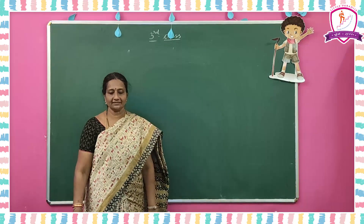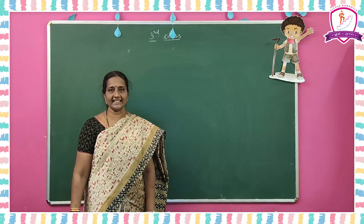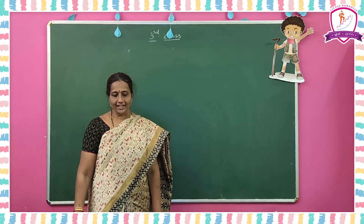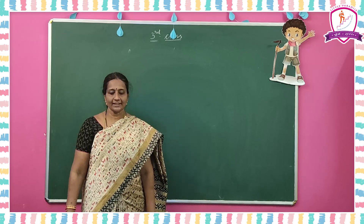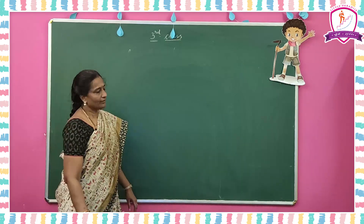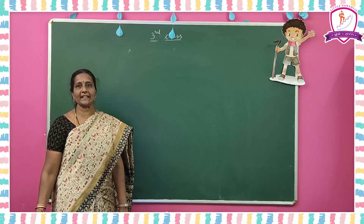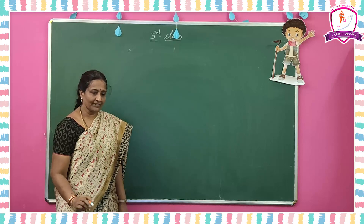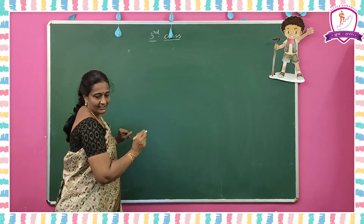Come to the next topic. Course book page number 23: addition of 3-digit numbers without regrouping. What is meant by regrouping? First, try to learn about this.